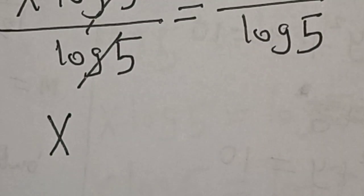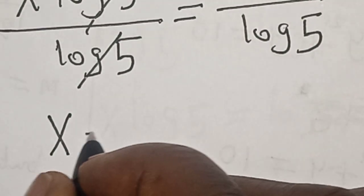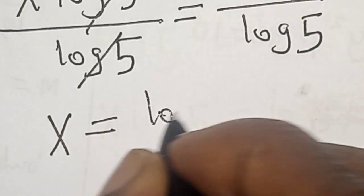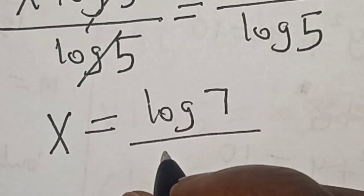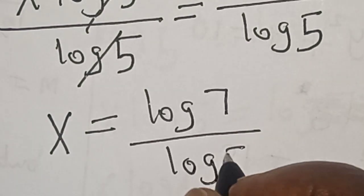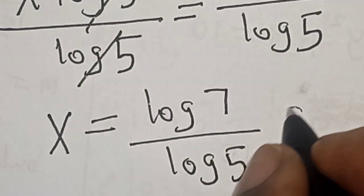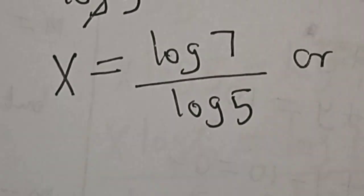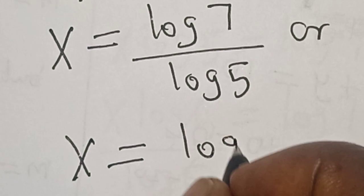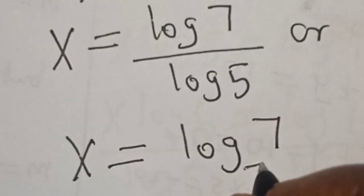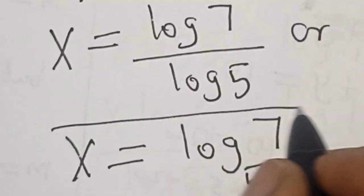So s equals log 7 divided by log 5. That is our answer: s equals log 7 divided by log 5.